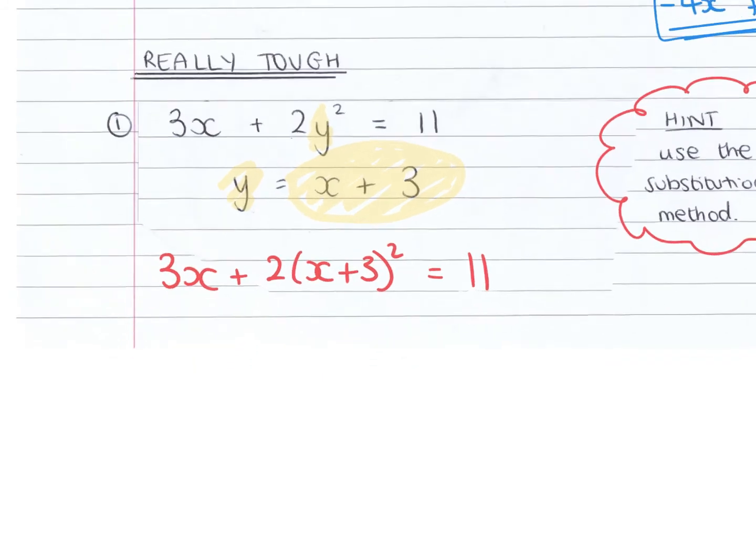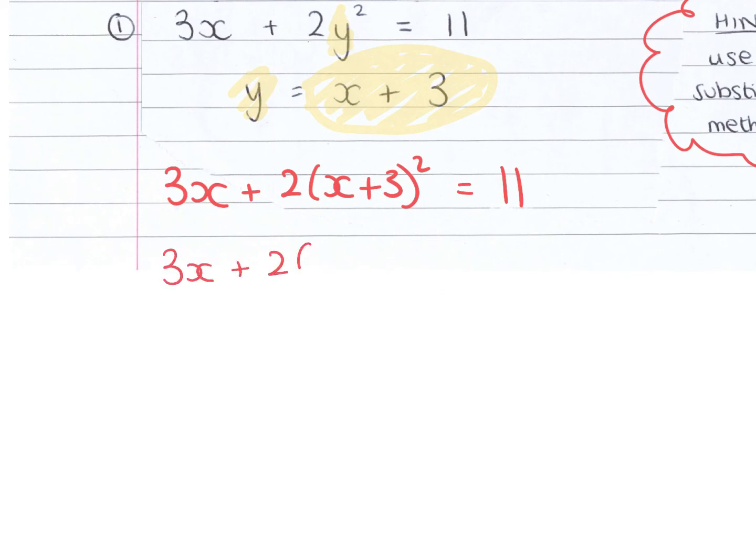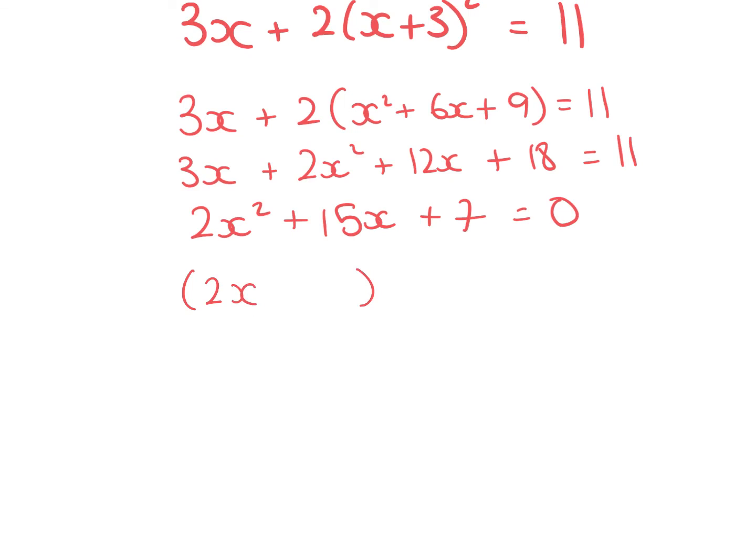I've only got one unknown. And then I just need to solve this like an equation. So x plus 3 all squared is x squared plus 6x plus 9. Then we've got 3x plus 2x squared plus 12x plus 18. And then I've got 2x squared plus 15x plus 7 equals 0. And then we need to solve this quadratic equation. I know it's going to factorise to 2x and x, and the other side has to be 7 and 1. So it's 2x plus 1 times x plus 7. Or you can split the middle term up: 2 times 7 is 14, and 14 and 1 add to get 15.